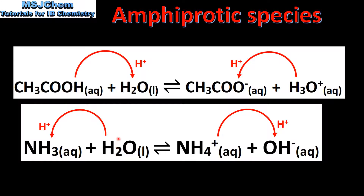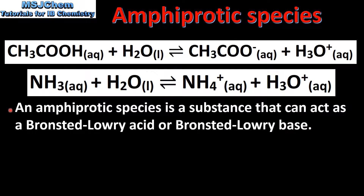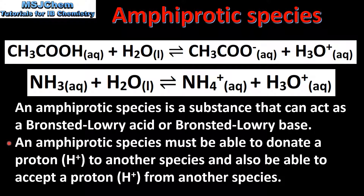So in these two reactions we have water acting as a Brønsted-Lowry base and water acting as a Brønsted-Lowry acid. An amphiprotic species is a substance that can act as a Brønsted-Lowry acid or Brønsted-Lowry base. Water can act as a Brønsted-Lowry base or a Brønsted-Lowry acid, therefore water is an amphiprotic species. An amphiprotic species must be able to donate a proton to another species and also be able to accept a proton from another species.